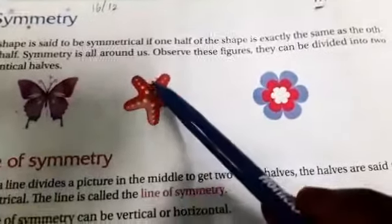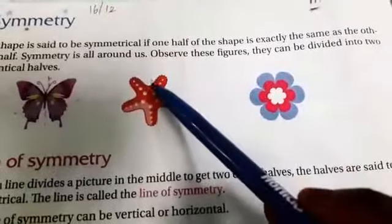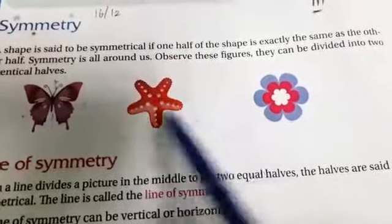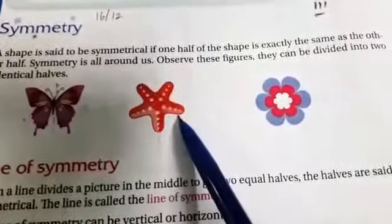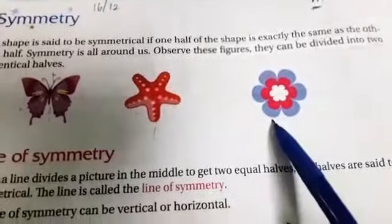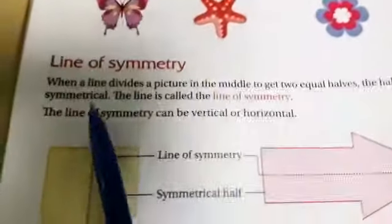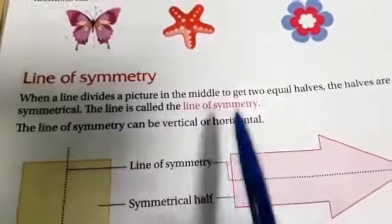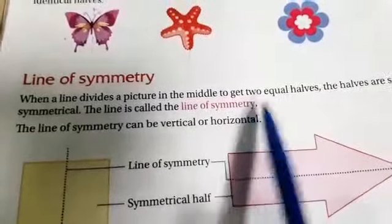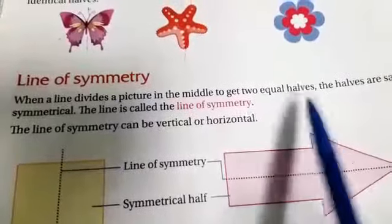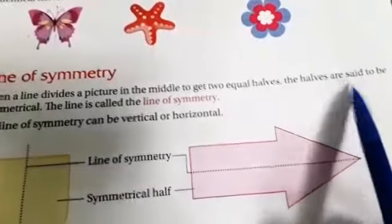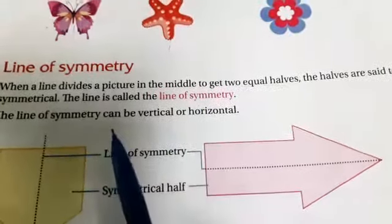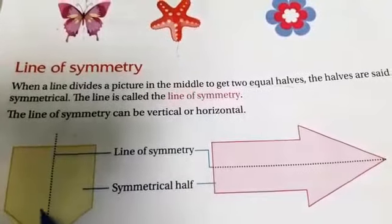We can divide a flower into symmetrical halves — both sides come to the same half. Line symmetry is when a line divides the picture in the middle to get two equal halves. Those halves are said to be symmetrical, and the line is called the line of symmetry.